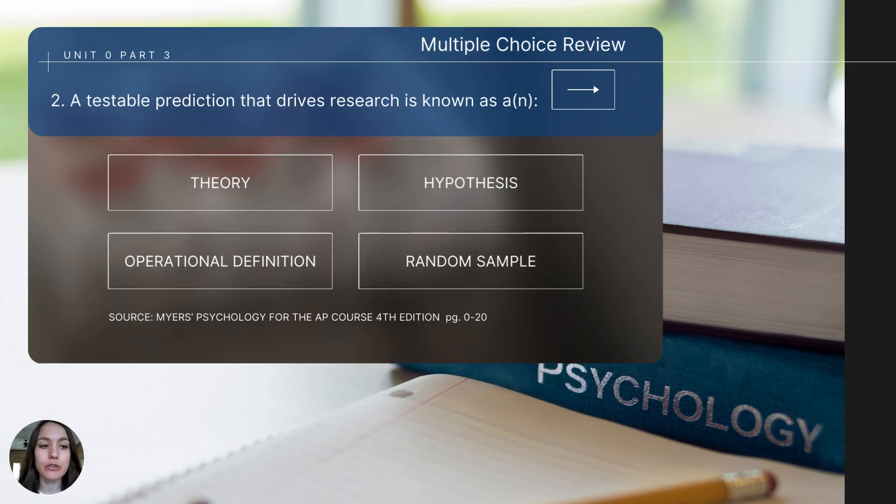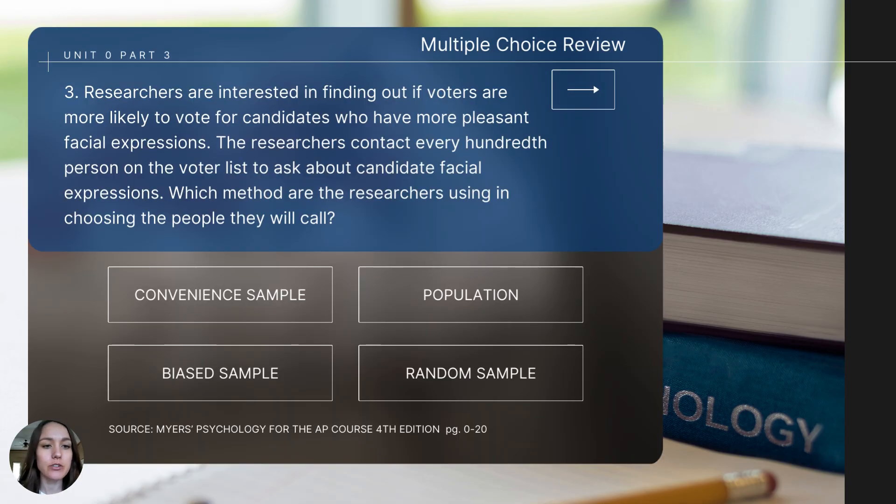Question number two says, a testable prediction that drives research is known as. Question number three says, researchers are interested in finding out if voters are more likely to vote for candidates who have more pleasant facial expressions. The researchers contact every hundredth person on the voter list to ask about candidate facial expressions. Which method are the researchers using in choosing the people they will call?